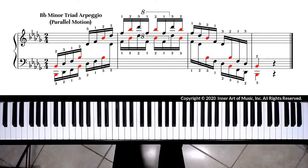I also suggest you practice hands separately with only one or two octaves to be able to secure accuracy of notes. After you're comfortable playing the Bb minor triad arpeggio hands separately, you may practice hands together.